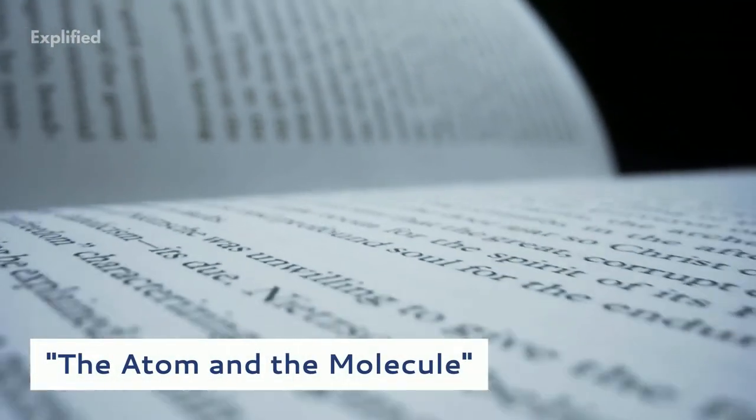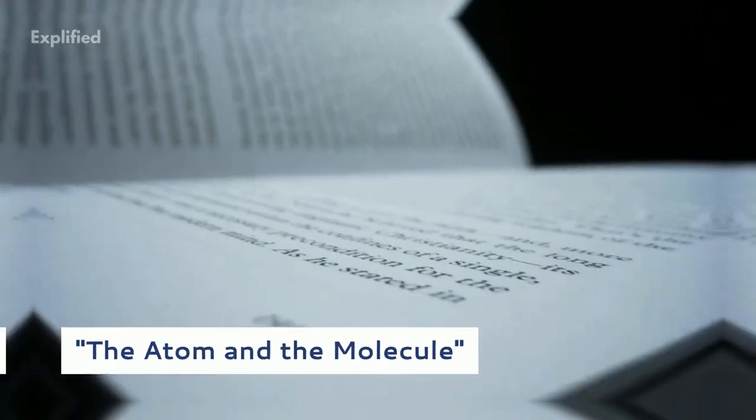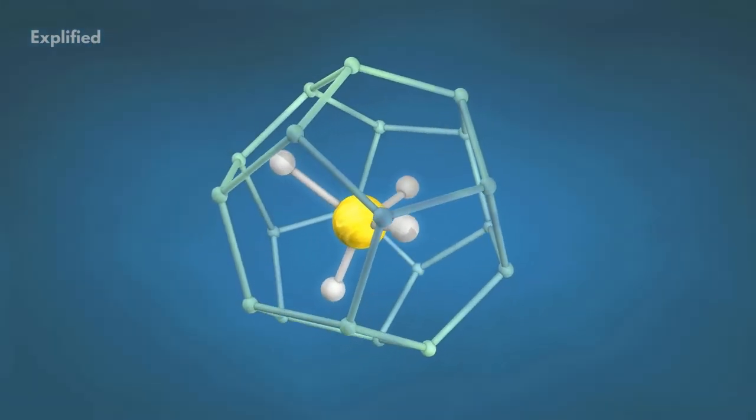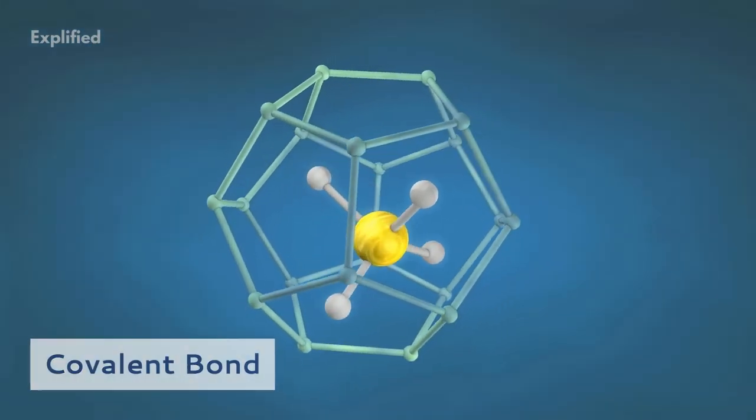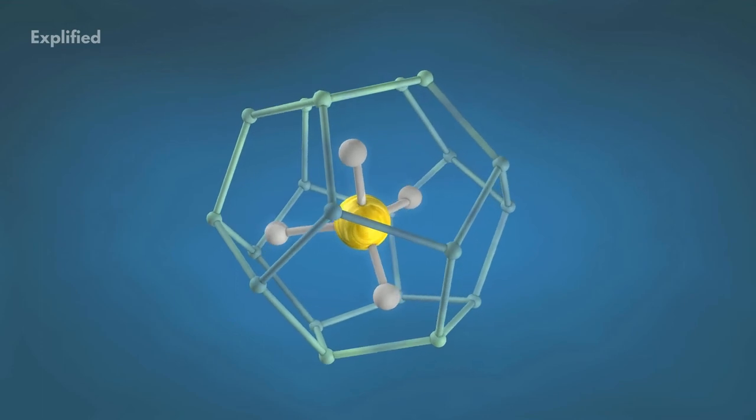In 1916, he published his research on chemical bonding as 'The Atom and the Molecule,' in which he formulated the idea of what would become known as the covalent bond, consisting of a shared pair of electrons.